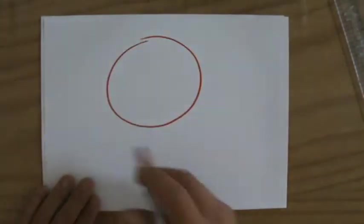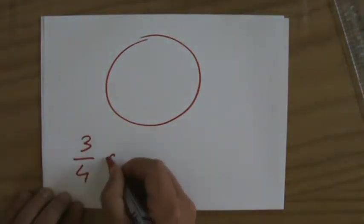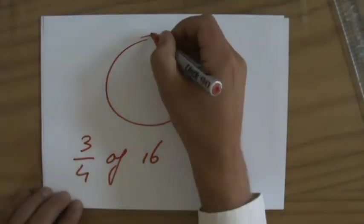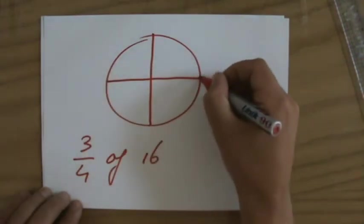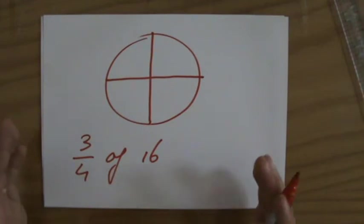If I have, let's say a circle and the question was, I'll just write it here, 3/4 of 16. So I divide it into 4 parts. 16 kilos. Let's say 16 kilos.